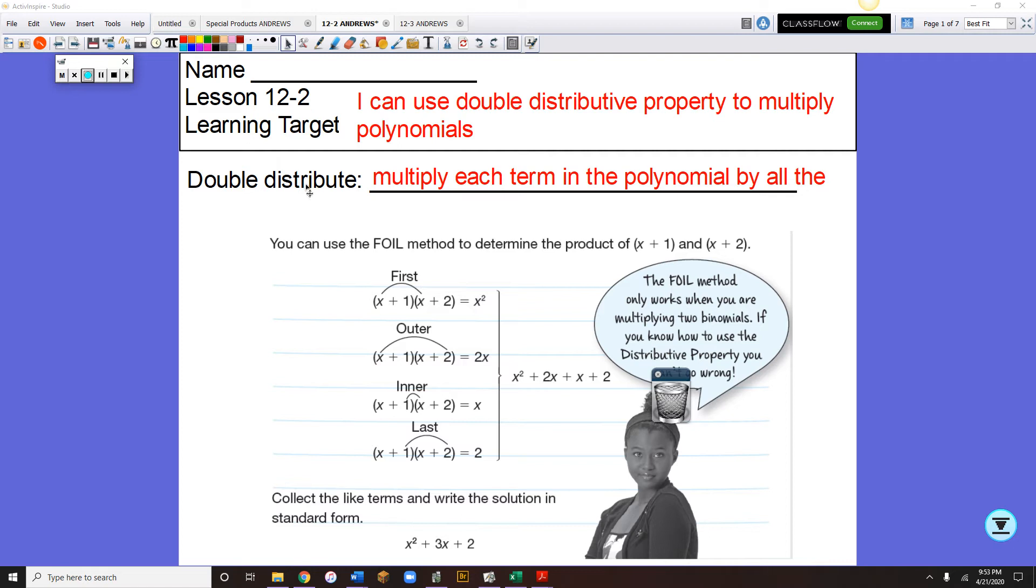So double distributing is kind of like distributing on steroids. We're going to be multiplying each term in the polynomial by all the terms in the second polynomial.